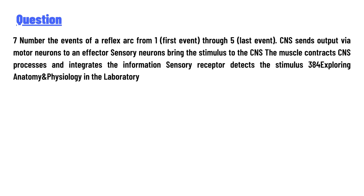The scrambled events given are: CNS sends output via motor neurons to an effector; sensory neurons bring the stimulus to the CNS; the muscle contracts; CNS processes and integrates the information; and the receptor detects the stimulus.